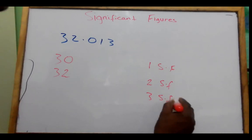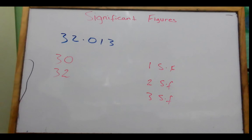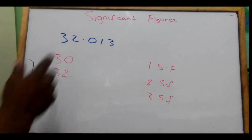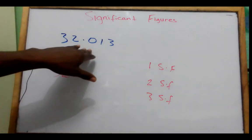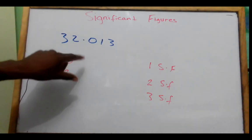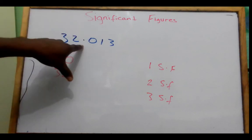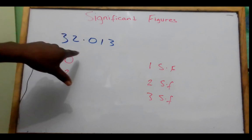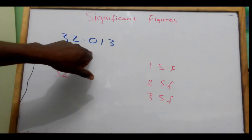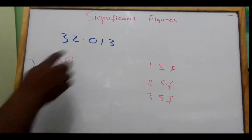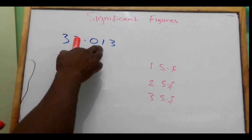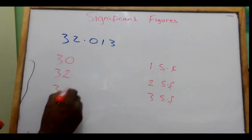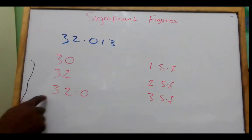Let us write this to 3 significant figures. We must look at this number. What do you realize about this 0? This 0 is not a leading zero — we have a decimal point here, and this 0 is in between, so it is considered a significant figure. So the third significant figure is 0. Since the next digit, 1, is less than 5, we write 32.0. This is 3 significant figures.